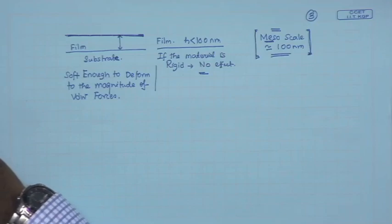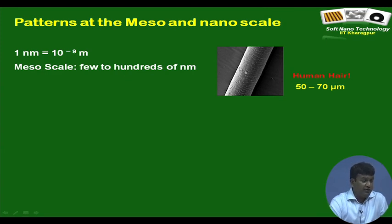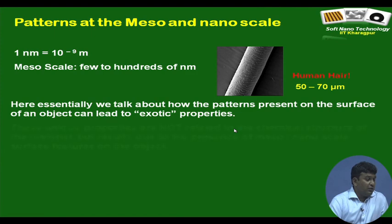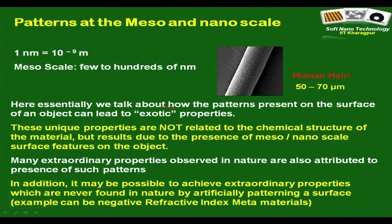Moving on, we will now talk about patterns at the nano and meso scale. Nanometer is 10 to the power minus 9 meters; meso scale is a few hundreds of nanometers. Human hair is 50 to 70 microns. So we are talking about things from a few microns down to a few tens of nanometers. What is important about nano-scale patterns is that there are certain exotic properties attributed to the presence of nano structures on the surface.